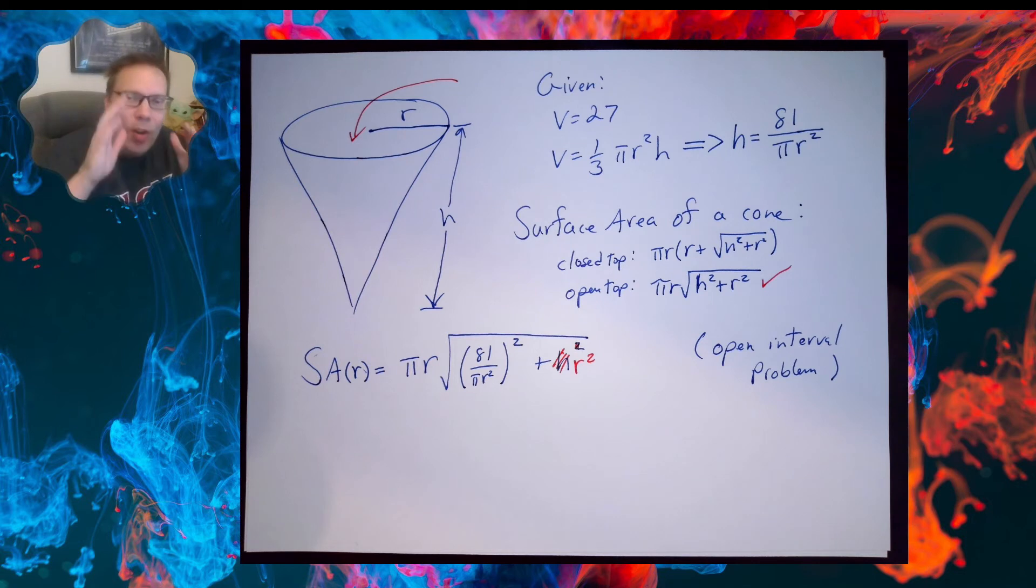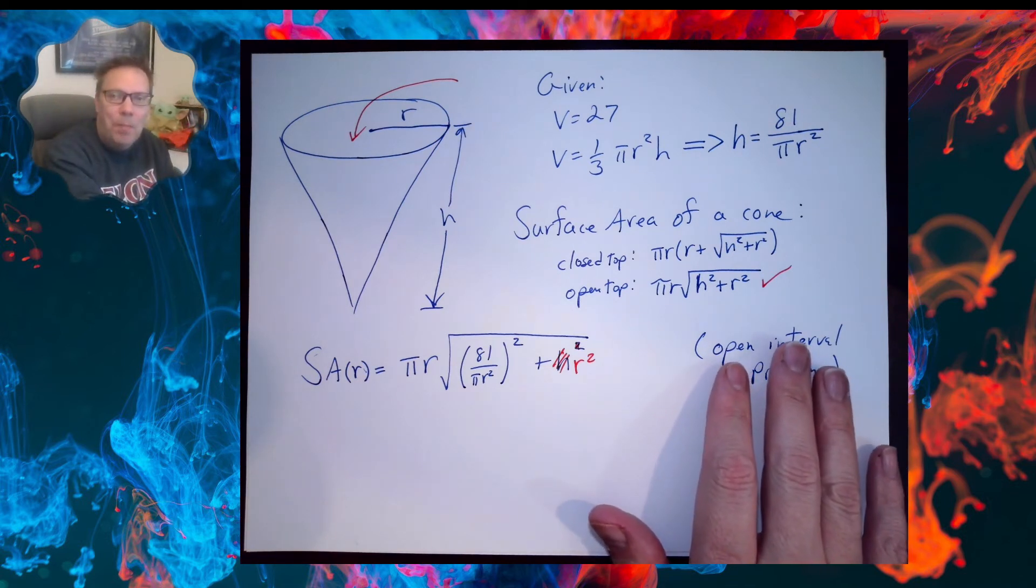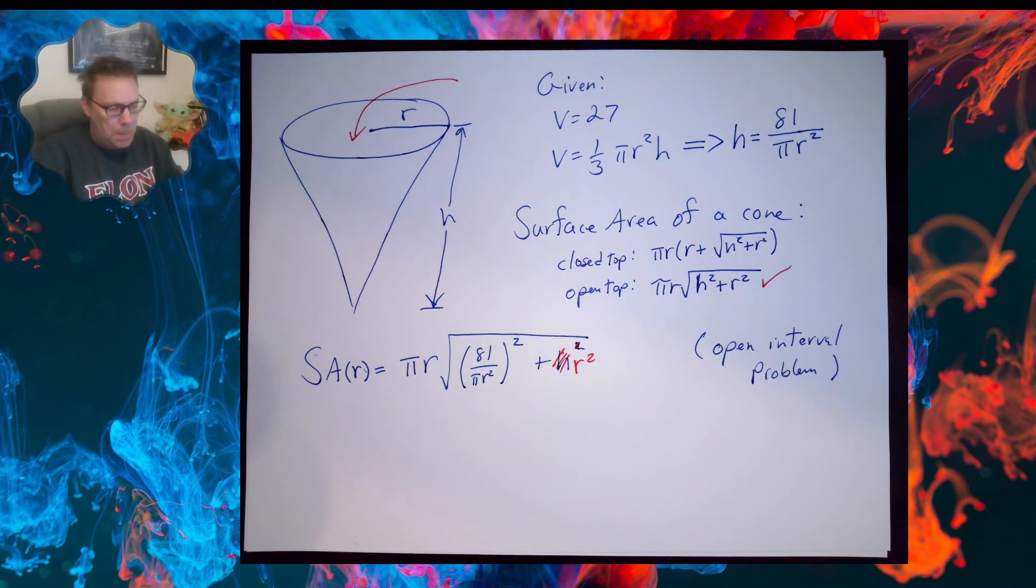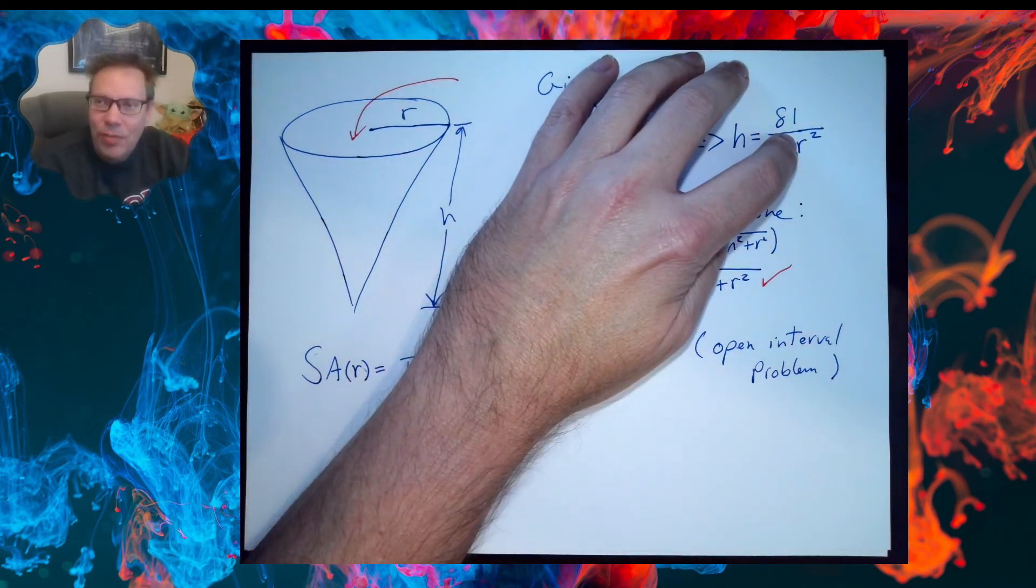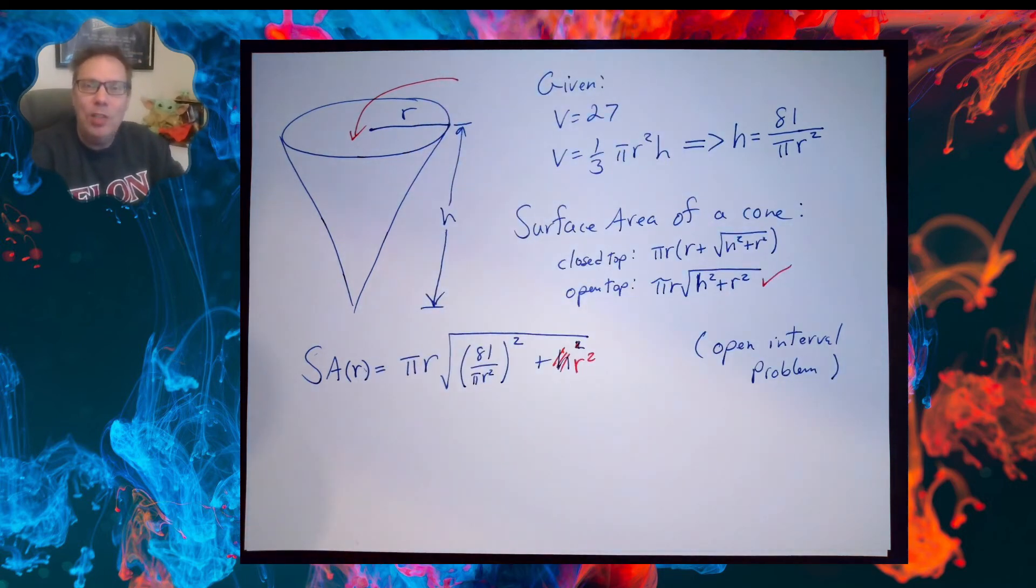Now I have a function for the surface area in one variable. This is an open interval problem, because I could make r as large as I want, and if I make r say a thousand, h is going to be really really tiny, but it's still going to have 27 cubic centimeters of volume. It will be unusable, but it still exists. So this is an open interval problem, so we cannot use a closed interval method here.